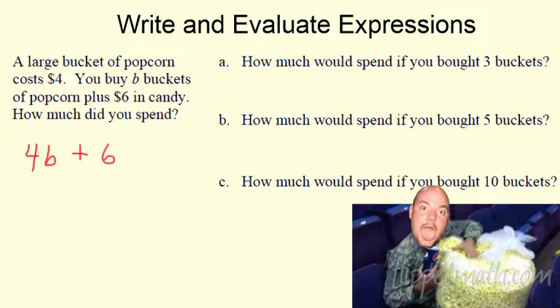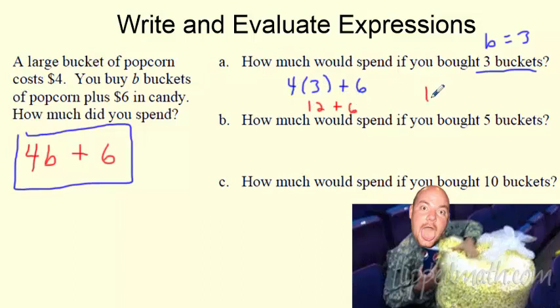That face could be an emoji. Holy cow, the large bucket of popcorn emoji. So how do we evaluate the expression? So if this is my expression right here, how much would I spend if I bought 3 buckets? So now I know what? I know B is 3. So I actually know what B is. So use your expression. It's going to be 4B, or 4 times 3, plus 6. Awesome. There it is. So can I plug it in? Can I chug along and get the answer? Sure. 4 times 3 is 12, plus 6. What is that going to cost me? $18. Boom. There it is. So if I buy 3 buckets, $18.